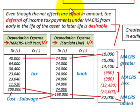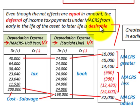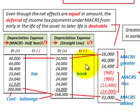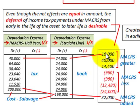Even though the net effects are equal in amount, the deferral of income tax payments under MACRS — from early in the asset's life to later — is desirable. With MACRS, using straight line for example, we have greater depreciation in the earlier years than in the later years. This deferral is usually desirable for corporations.